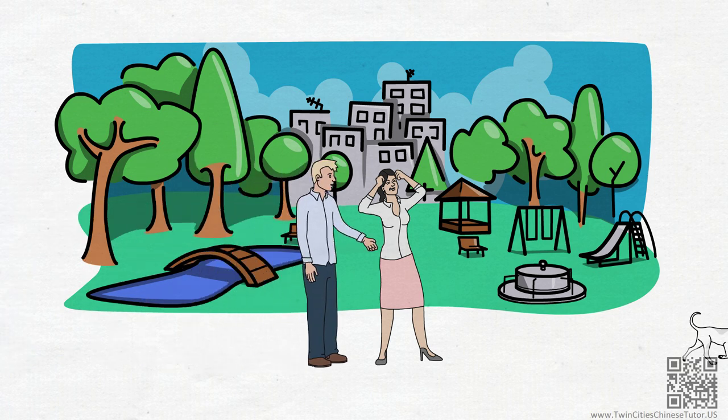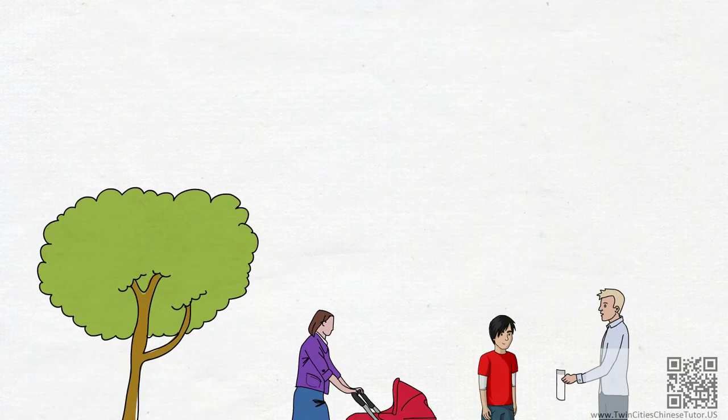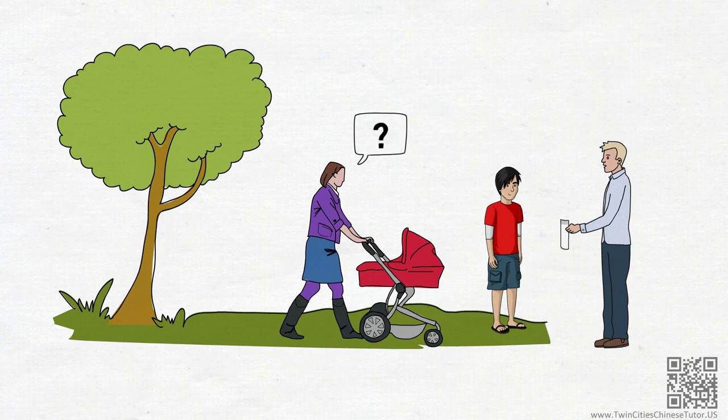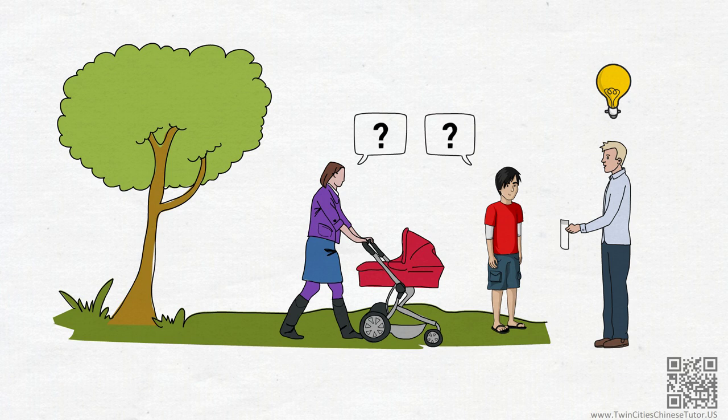Loic made several attempts to talk to the people in the area, but they all seemed a bit confused when Loic asked questions. It occurred to Loic that he should try to build his questions using a grammar pattern that works particularly well for asking for detailed information — that is, the 是的 pattern. But how do we use it? Loic can't remember clearly.